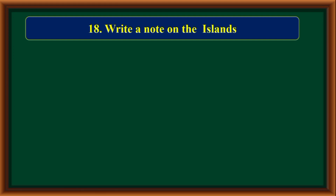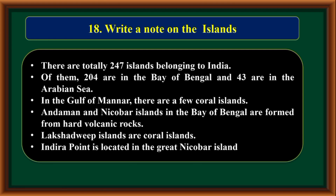Write a note on the islands. There are totally 247 islands belonging to India. Of them, 204 are in the Bay of Bengal and 43 are in the Arabian Sea. In the Gulf of Mannar there are a few coral islands. Andaman and Nicobar Islands in the Bay of Bengal are formed from hard volcanic rocks. Lakshadweep Islands are coral islands. Indira Point is located in the Great Nicobar Island.